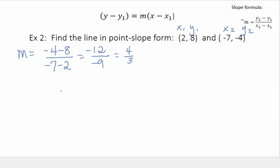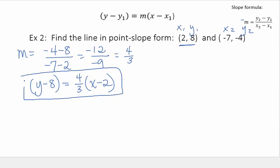Now, I'm going to put it in point-slope form using this point first. So y minus 8 equals, the slope was 4 thirds, and then x minus 2. That's one solution to this problem using that first point.